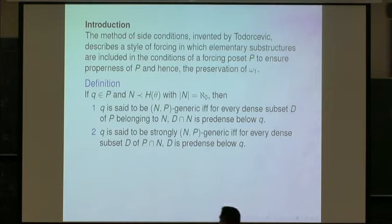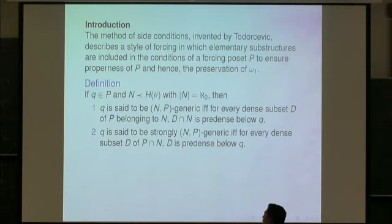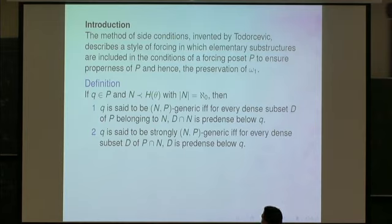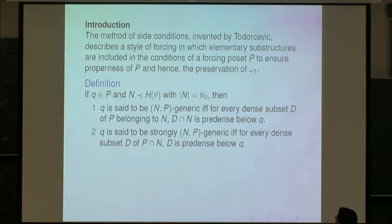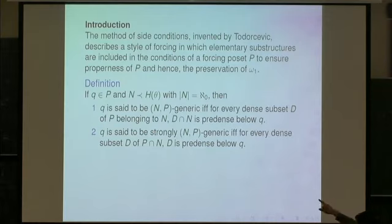Let me recall some basic definitions. If we have a poset and a condition Q living in P, and we have a countable elementary substructure of H_theta, then Q is said to be NP-generic if and only if for every dense subset D of P belonging to N, D intersection N is predense below Q, which means that any generic filter containing Q is going to intersect D intersection N.